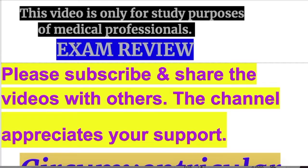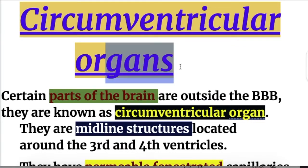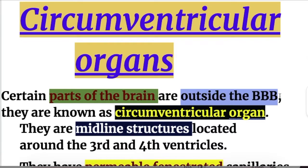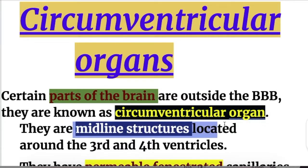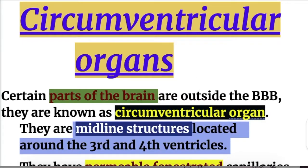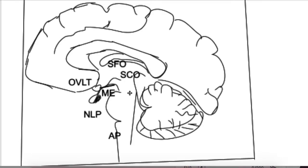In this video we'll do an exam review on the circumventricular organs. What are circumventricular organs? Certain parts of the brain are outside the blood-brain barrier. They are known as circumventricular organs and they are midline structures located around the third and fourth ventricle.